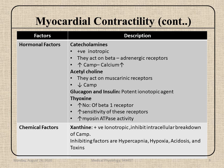Now chemical factors: xanthine, which is a positive inotropic agent, inhibits intracellular breakdown of cyclic AMP. Inhibiting factors include hypercapnia, hypoxia, acidosis, and toxins. Drugs also play an important role in myocardial contractility.